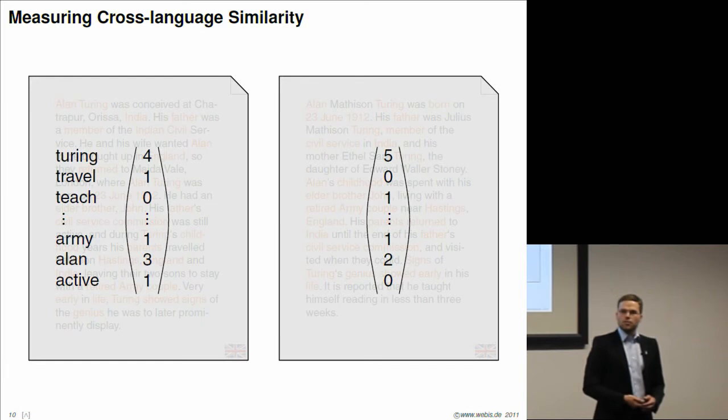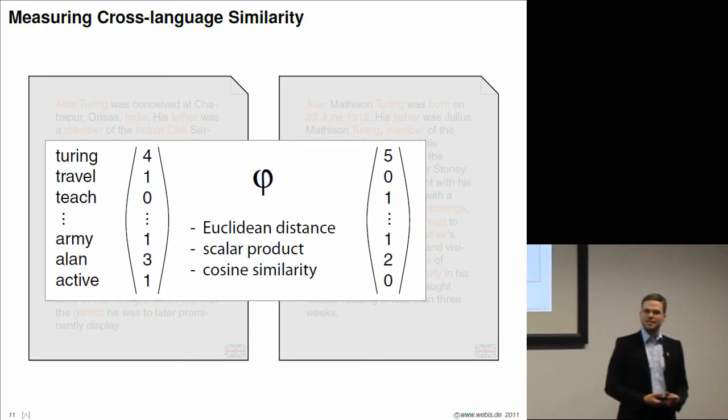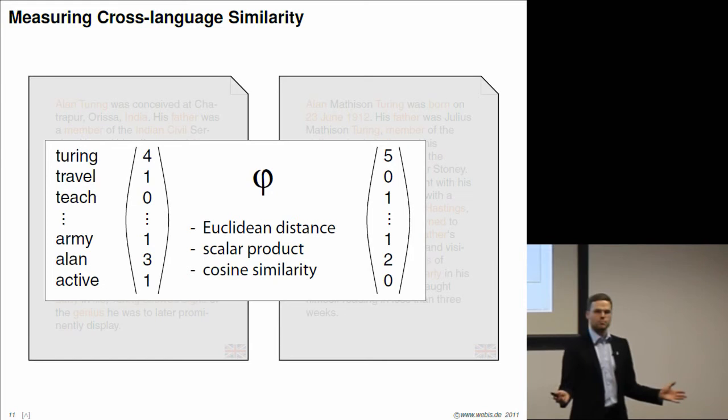Since we interpret these structures as vectors, we can treat them with standard vector mathematics. We can compute the similarities of vectors by computing the Euclidean distance, the scalar product of the vectors, or the cosine similarity. The latter is most usually used in information retrieval. What we get is a value between zero and one, where zero denotes absolutely no similarity between the two documents, and one denotes a maximum similarity. So a perfect overlap of words.